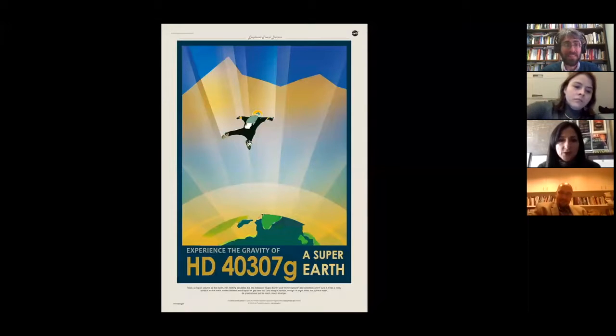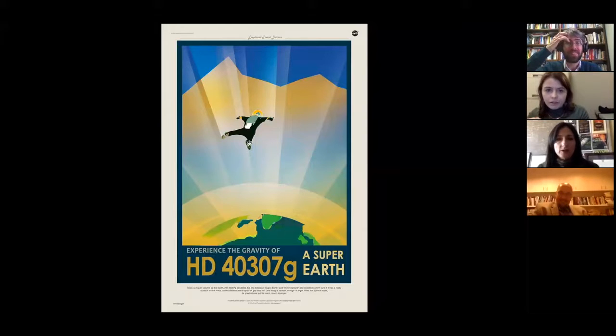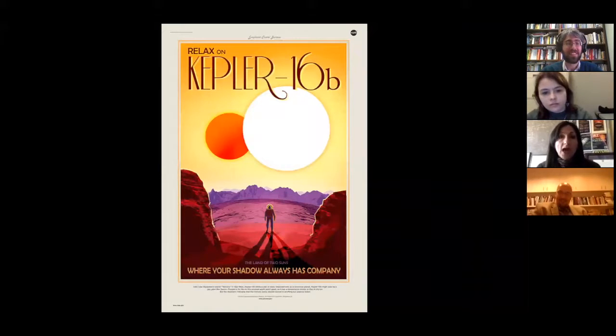This one says, experience the gravity of HD 40307g, a super-Earth. And here, it's imagining a planet named 40307g. It has a higher surface gravity than Earth. And maybe you could imagine going there and skydiving. Relax on Kepler-16b. The land of two suns, where your shadow always has company. Now this particular planet, and at least a dozen like it, are known to have two suns. That means they actually orbit two stars. And you would literally see two sunsets.